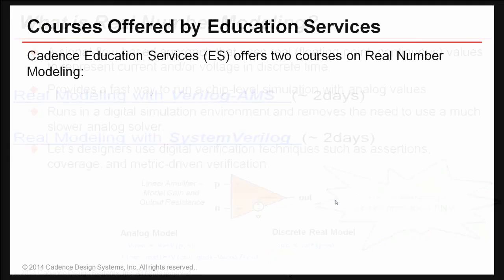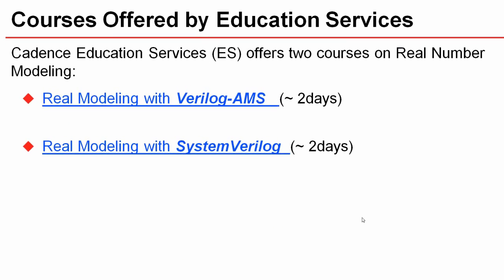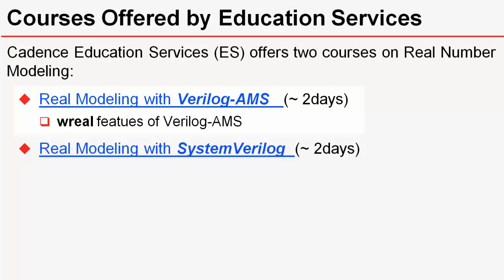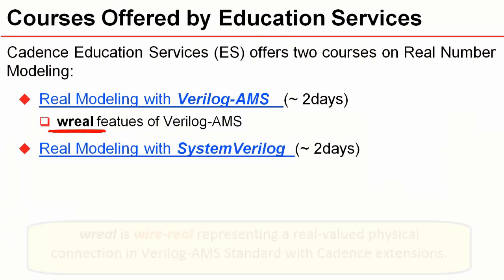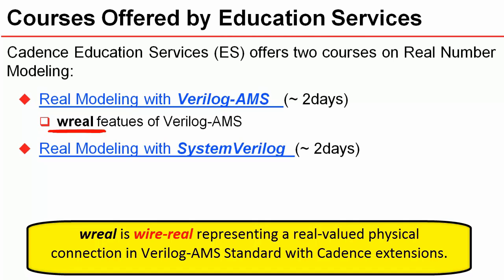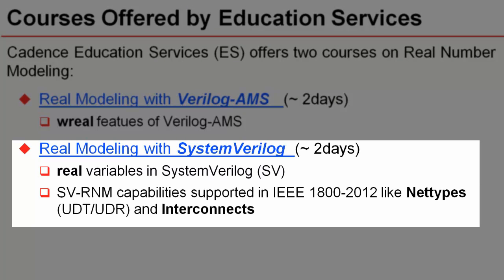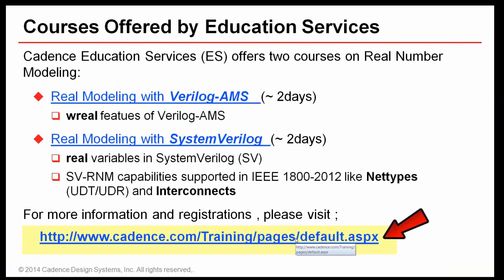Are you keen on learning about real number modeling? Depending upon the language of your choice, Cadence Education Services offers two courses. The real modeling with Verilog AMS is a two-day course covering the double real features of the Verilog AMS language, where double real is a wire real representing a real-valued physical connection. It also has Cadence-specific extensions beyond the Verilog AMS standard for creating real number models. The real modeling with SystemVerilog is another two-day course covering real variables in SystemVerilog and real number modeling capabilities supported in IEEE 2012, such as nettypes, UDT, UDRs, and interconnects. Register now to take these classes and tackle mixed-signal verification challenges.